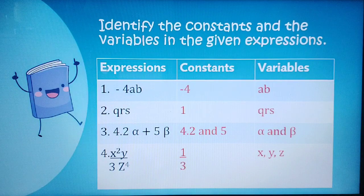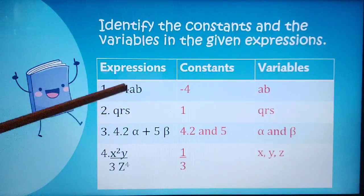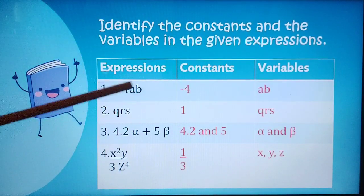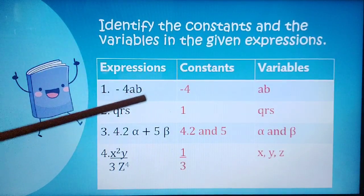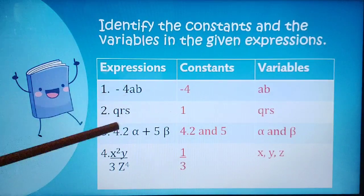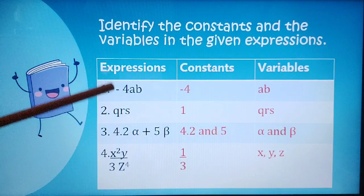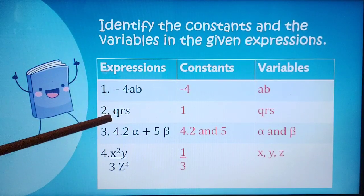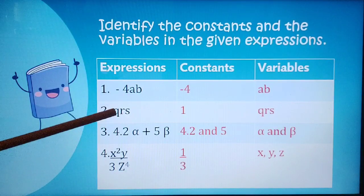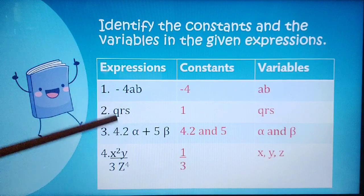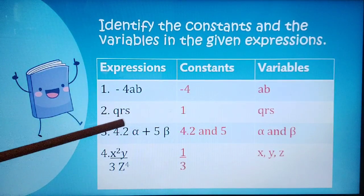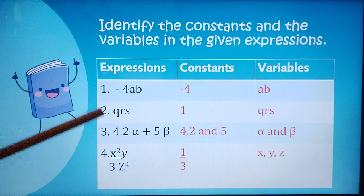So the constant here is negative 4 because this is the number, and the variables here are A and B because these are letters. For the second expression, the constant is 1 because if there's no other number given, it means that is 1. And then the variables are Q, R, S — they are letters.